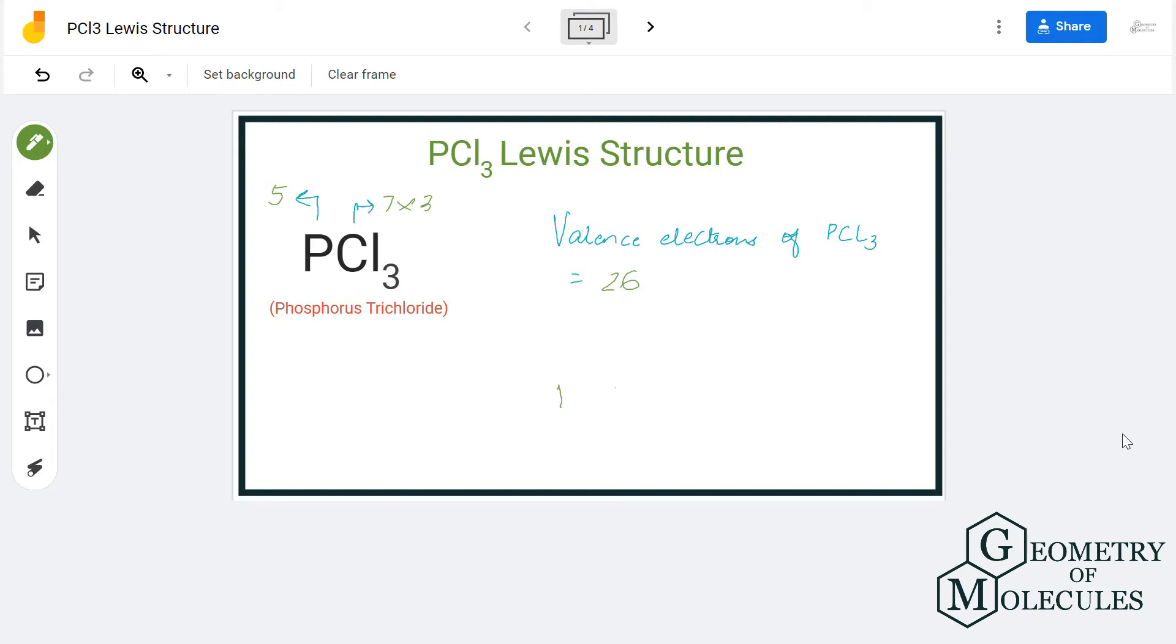Now you know the valence electrons for PCl3, we'll place phosphorus in the center and all chlorine atoms will be arranged around this atom. For showing the bonds between phosphorus and chlorine we will place two electrons which represent a single bond formation. So we have used six out of 26 valence electrons and we are left with 20 valence electrons.